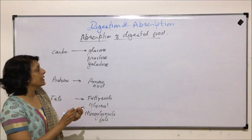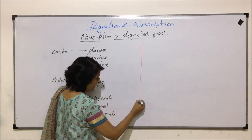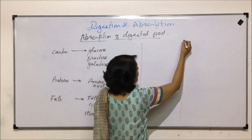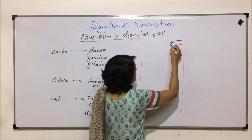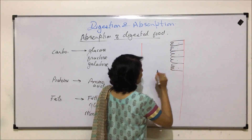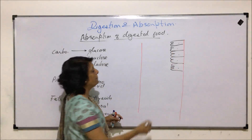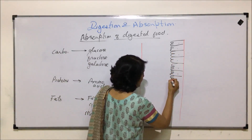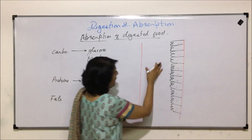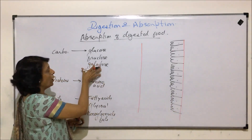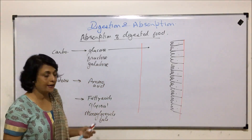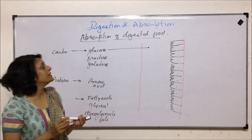To understand this, we will draw a simple diagram which represents the elementary canal. In the elementary canal, we know that the cells have microvilli. We are just showing the microvilli — this is the brush border epithelium. And this area is the lumen. All this digested material is here in the lumen part, and we want to understand how these things get absorbed.